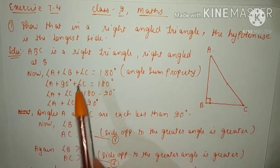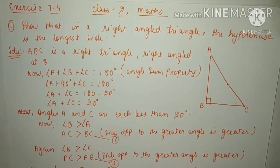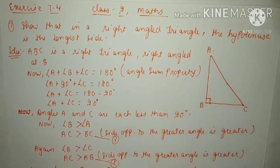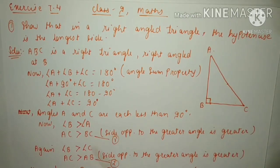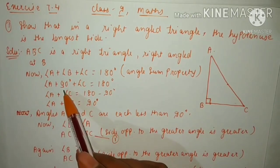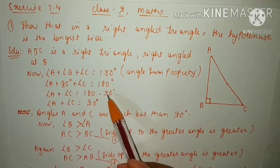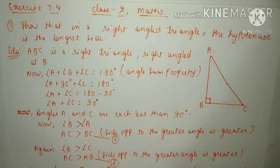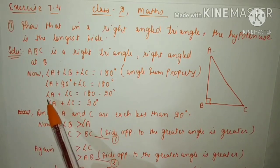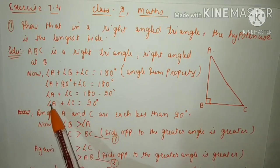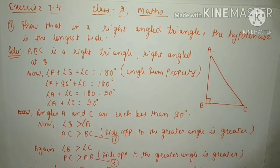So angle A plus angle B plus angle C equals 180 degrees, because of the angle sum property of a triangle. Now angle B is given as 90 degrees, so angle A plus 90 degrees plus angle C equals 180 degrees. Transposing 90 degrees to the right hand side gives angle A plus angle C equals 90 degrees.